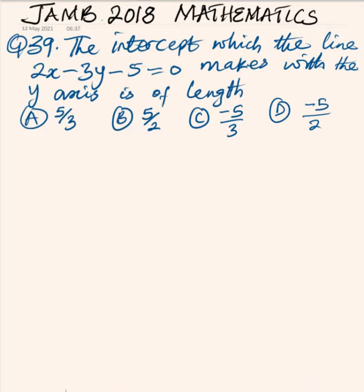Question number 39. The intercept which the line 2x minus 3y minus 5 equal to 0 makes with the y-axis is of length.